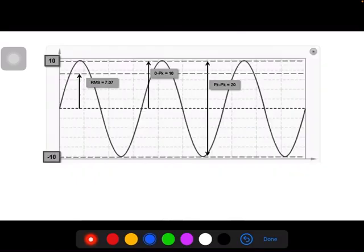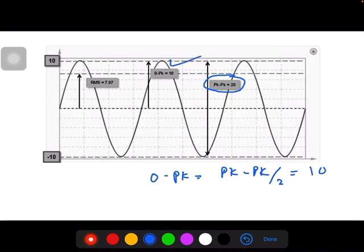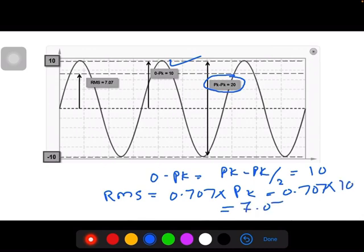Consider an example: suppose peak to peak measurement is 20. Zero to peak equals peak to peak divided by 2, so 20 divided by 2 is 10. The RMS value is 0.707 times peak, so 0.707 times 10 equals 7.07 RMS value. In this way you can calculate.